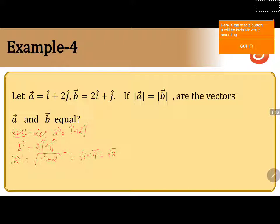Similarly, we will take the magnitude of B, where B vector is 2i-cap plus j-cap. Magnitude of B equals square root of i-coefficient 2 squared plus j-coefficient 1 squared, which is square root of 4 plus 1, that is root 5.